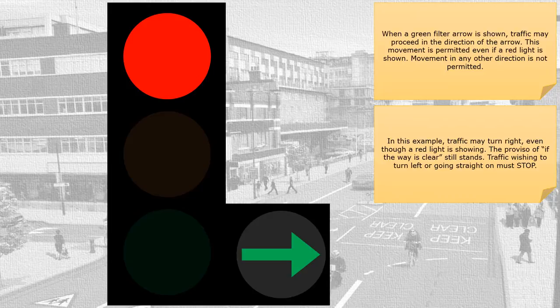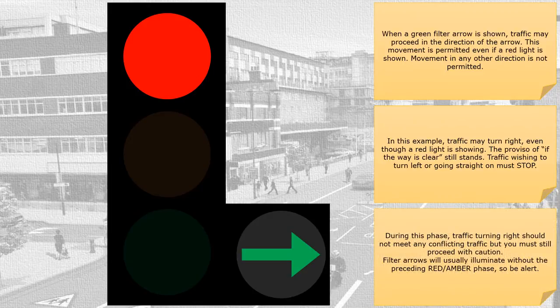Traffic wishing to turn left or going straight on must stop. During this phase, traffic turning right should not meet any conflicting traffic, but you must still proceed with caution. Filter arrows will usually illuminate without the preceding red and amber phase, so be alert.